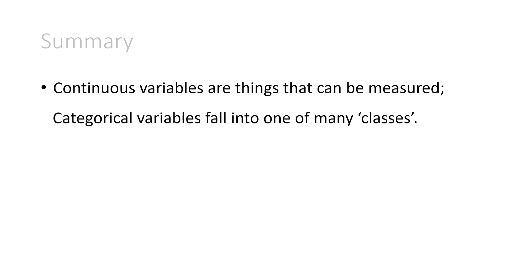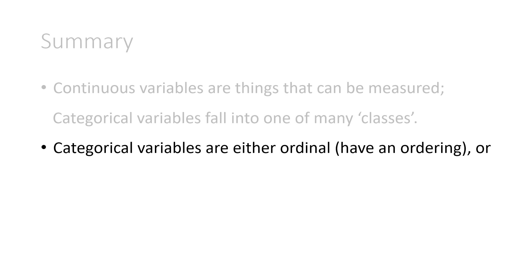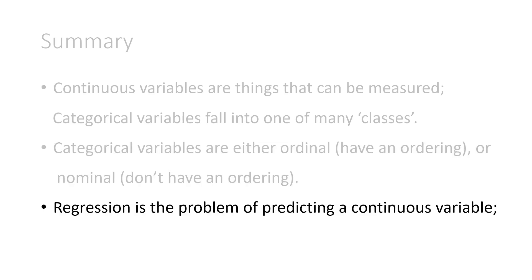So in summary, continuous variables are things that can be measured, whereas categorical variables fall into one of many classes. Categorical variables are either ordinal, they have an ordering, or nominal, they don't have an ordering. Regression is the problem of predicting a continuous variable, whereas classification is the problem of predicting a categorical variable. That's the end of this video.